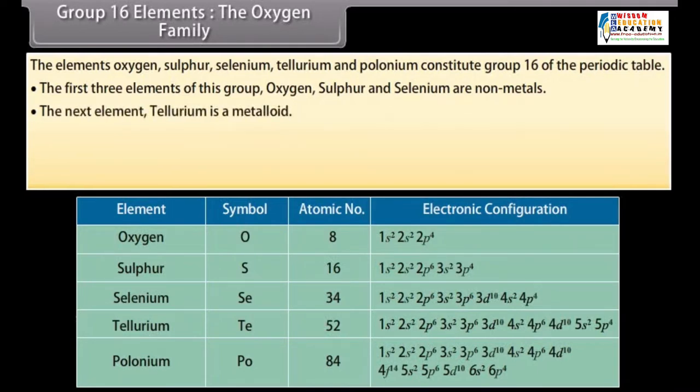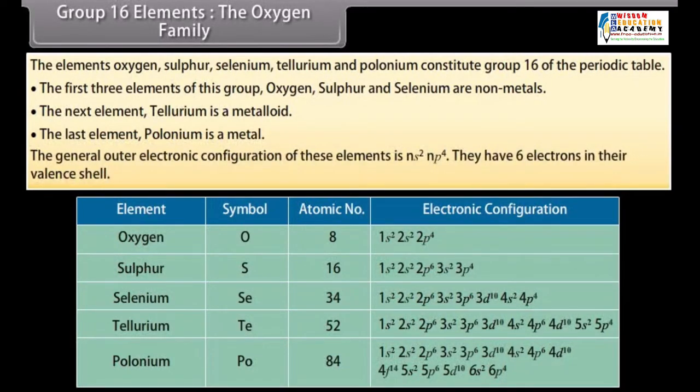The next element, tellurium, is a metalloid. The last element, polonium, is a metal. The general outer electronic configuration of these elements is NS2 and P4. They have six electrons in their valence shell.